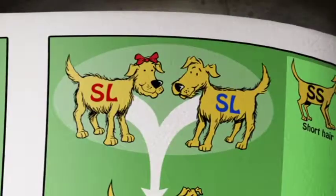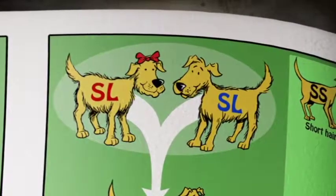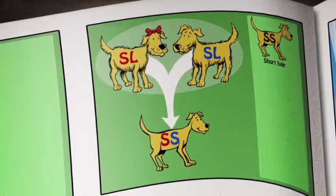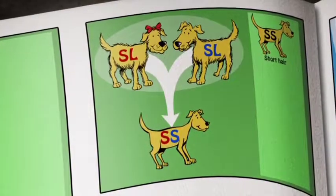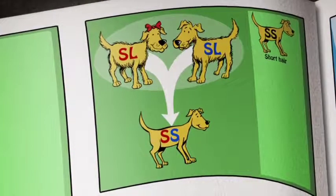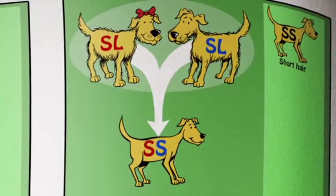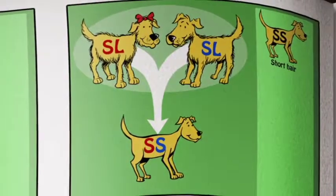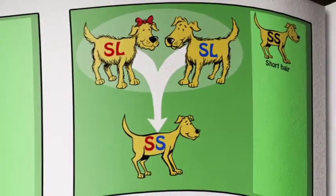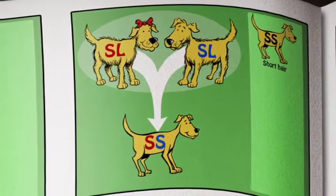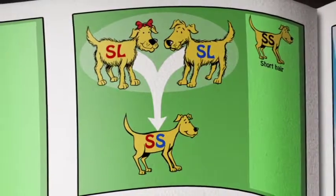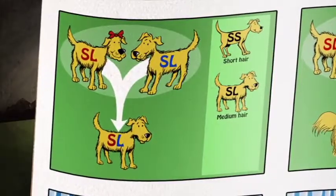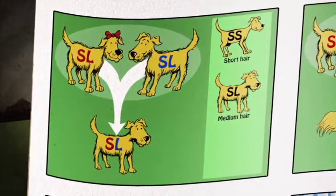So they fall in love and they have offspring. They have one that inherits an S gene from each of the parents — that one has two S genes. It's going to look different to the parents. Well, it's not new information, it's a new combination of information. And then you might get one that looks like the parents and inherits an S and an L gene.